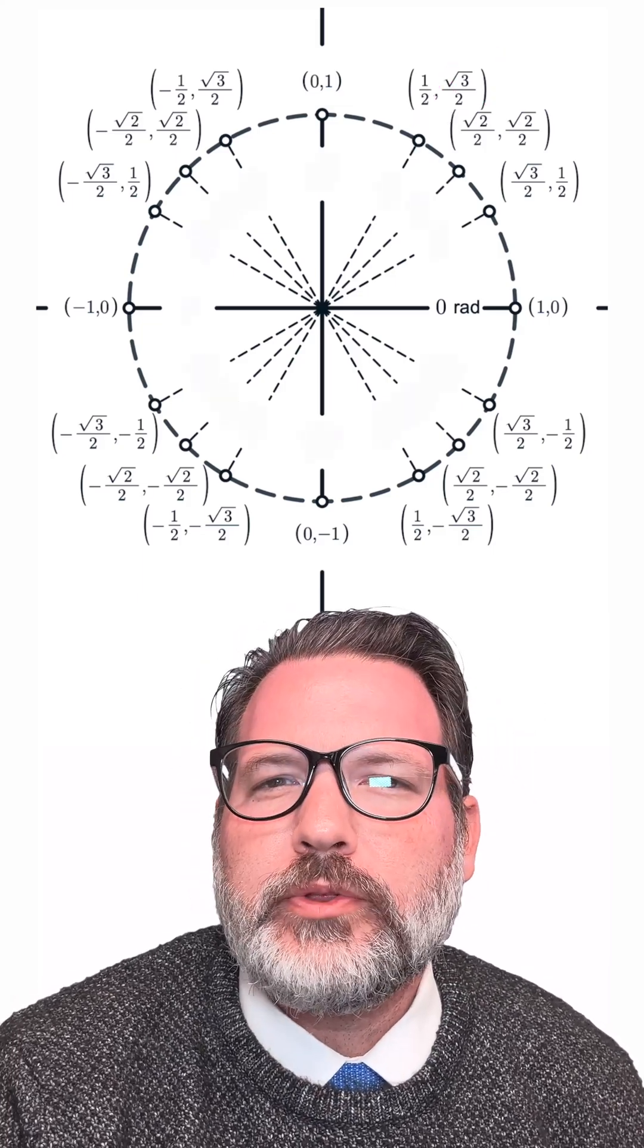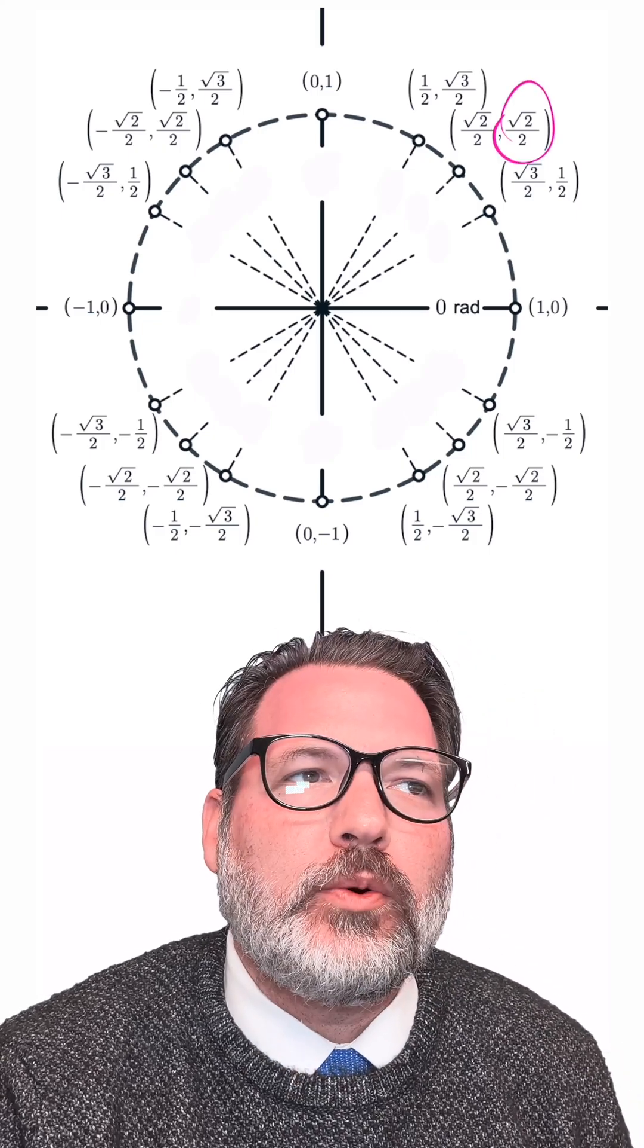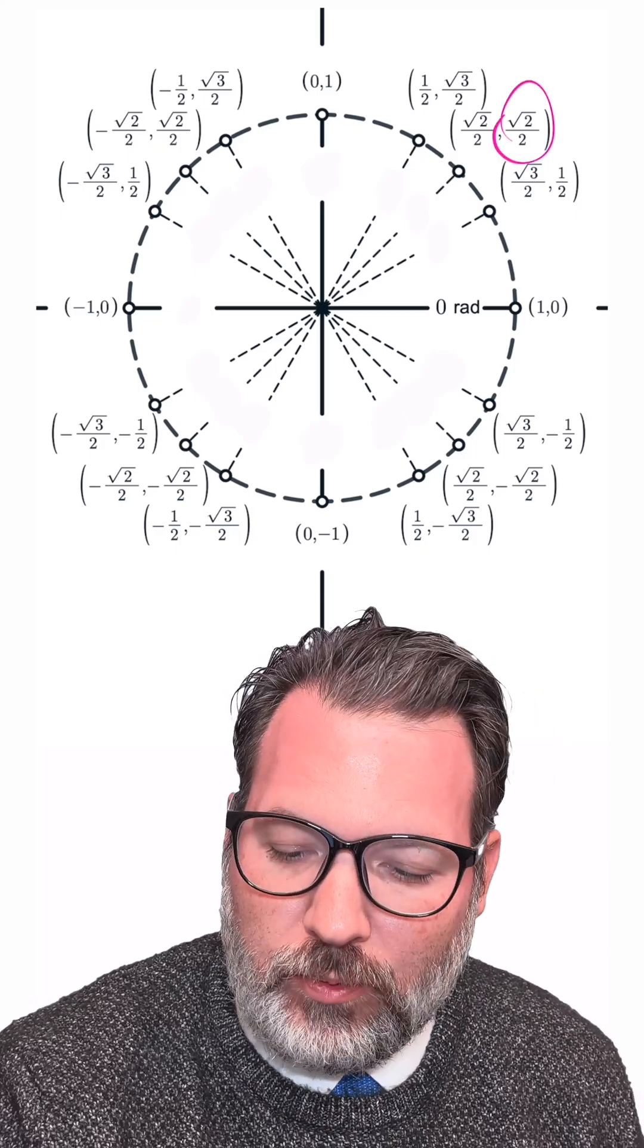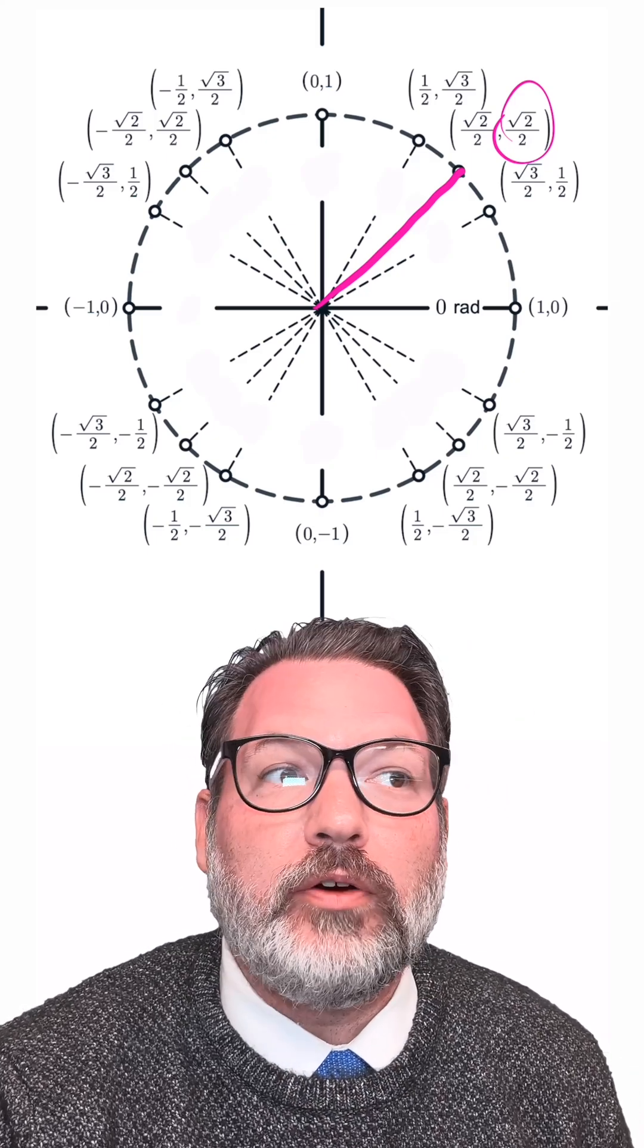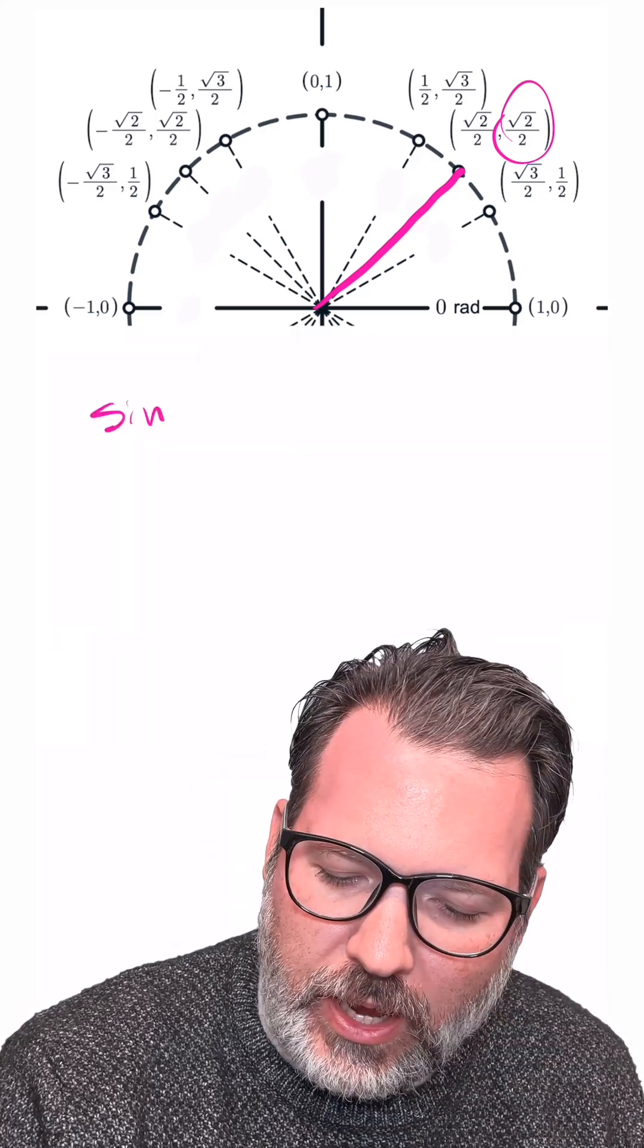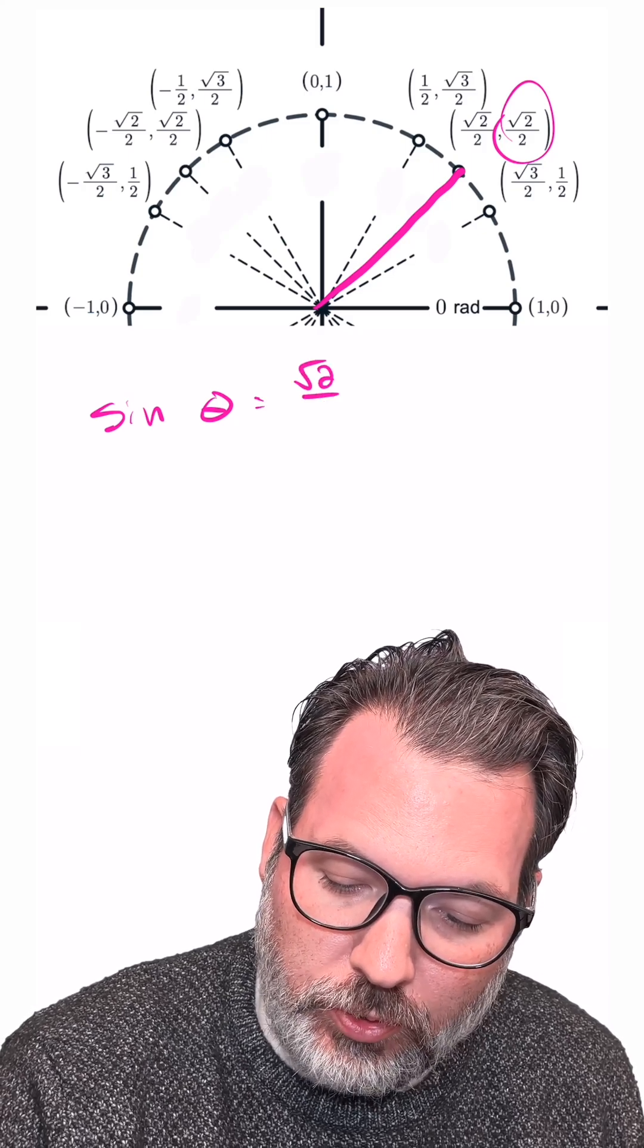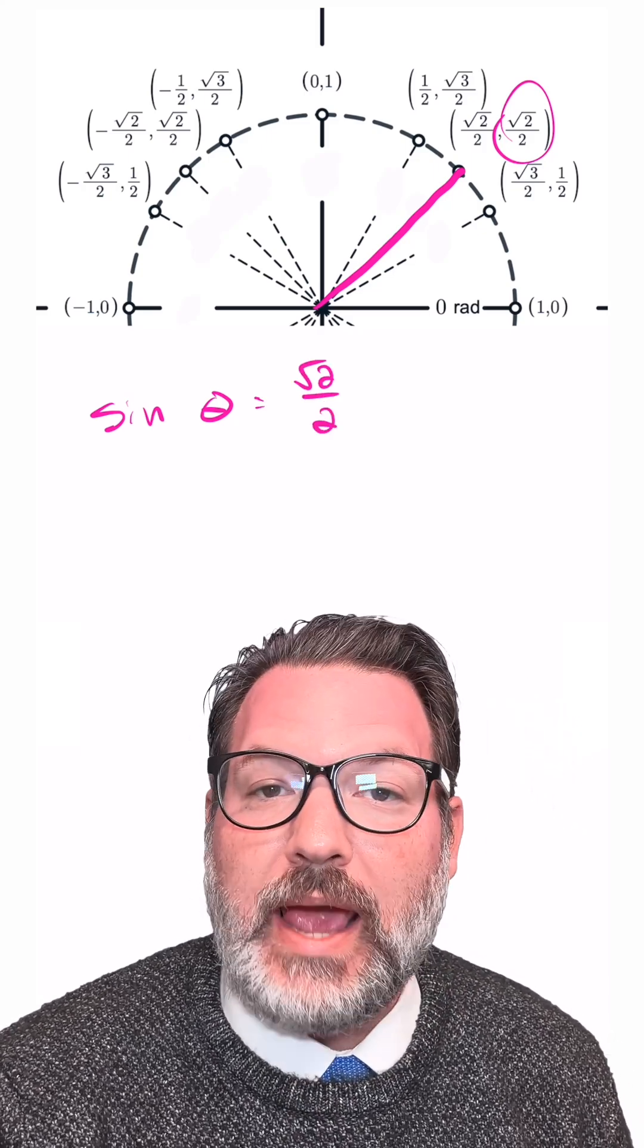But what if I wanted to do this process backwards? What if I gave you a y-coordinate? I said there's some angle that when we draw it into the unit circle, it's going to give us back a y-coordinate of root 2 over 2. Essentially, we're saying the sine value of some angle is equal to root 2 over 2. What is the angle?